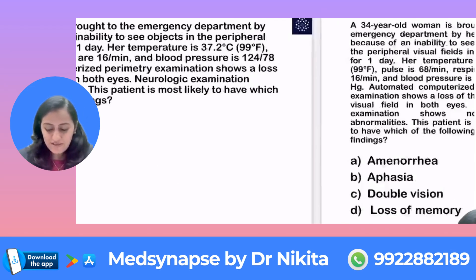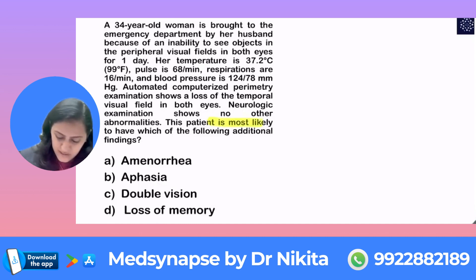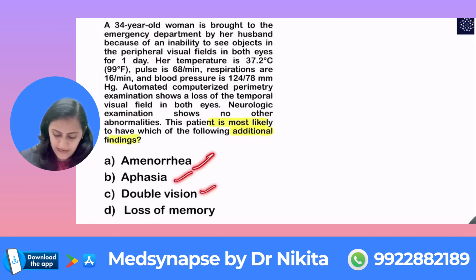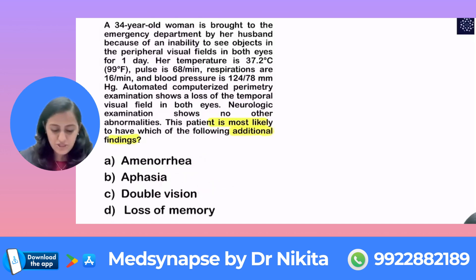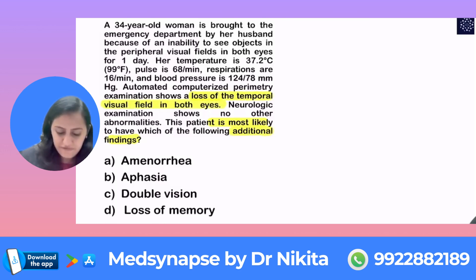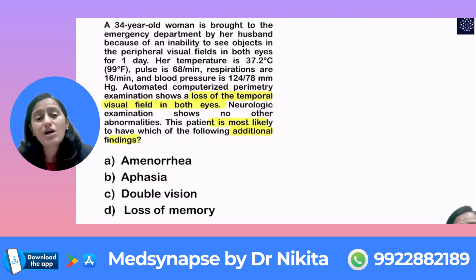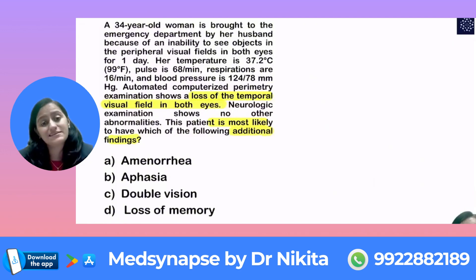On to the next question — this is your third question, another interesting one. This patient is most likely to have which of the following additional findings: amenorrhea, aphasia, double vision, or loss of memory? What we see in this patient is loss of temporal visual field in both eyes. That is how you try reading the question between the lines.